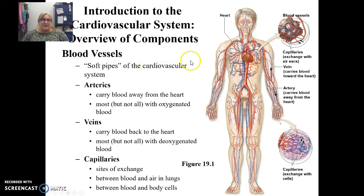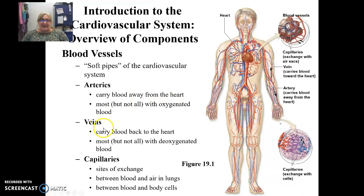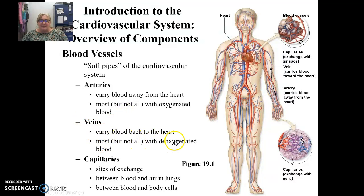The components of the cardiovascular system — we've talked about blood in chapter 18 — but we also have blood vessels. Blood vessels include the arteries, the capillaries, and the veins. Arteries are always carrying blood away from the heart, and veins always carry blood back to the heart. In general, arteries have oxygenated blood, and veins have deoxygenated blood, but this is not always true. The capillaries are the site where gases and nutrients are exchanged with our cells.